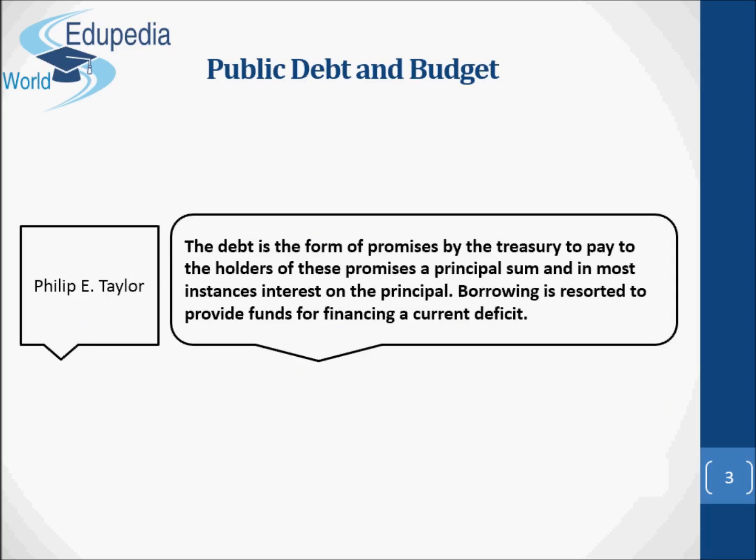Among the non-tax sources, the major source of revenue of the government is public debt, that is borrowing. It may either be internal or external debt. When the government raises revenue by borrowing from within the country, it is called internal debt. Similarly, if the government is borrowing from the rest of the world, it is a case of external debt.